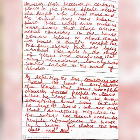By repeating the line 'something went wrong' — which appears two or three times in the poem — the poet is emphasizing the fact that some unexplained disaster forced people to leave. He says it once and we know something went wrong, but when he says it twice, we are sure that something negative in nature has been the reason for people abandoning the house in a hurry.